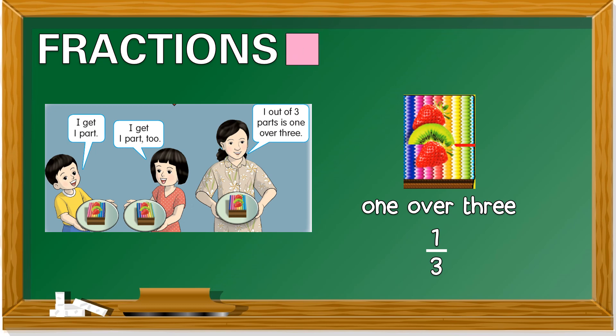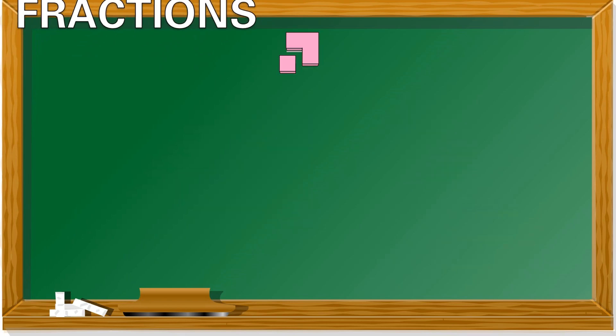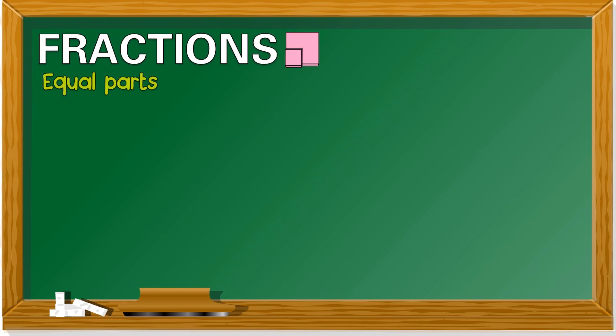One over three can be written in sentence like this. One over three or in words. One with a dash three. Align in between the two numbers. The one on top is called numerator. This line, it's over. That's why in the sentence, we have over. The one below is denominator. Say it with me, class numerator. Numerator. The one below, denominator. Denominator. Remember, fractions must be equal parts.